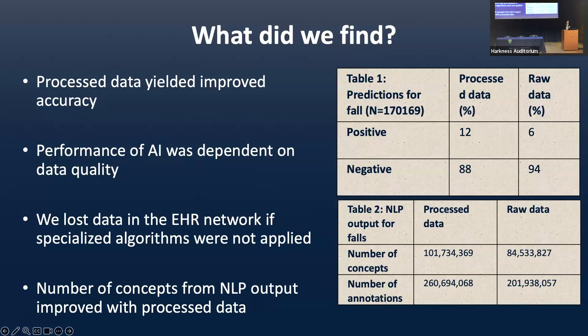What did we find? Processed data yielded improved accuracy. The performance of AI was dependent on data quality. We lost data in the EHR network if specialized algorithms were not applied for cleaning, and the number of concepts from NLP output were much improved with processed data. Table one shows the output for the machine learning algorithm — the processed data prediction is almost double compared to the raw data predictions. Table two shows NLP output for falls, where the number of concepts in the processed data column is much higher than in the raw data.